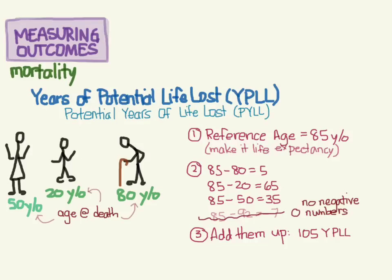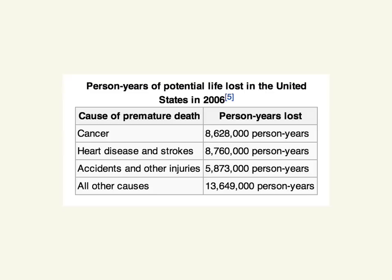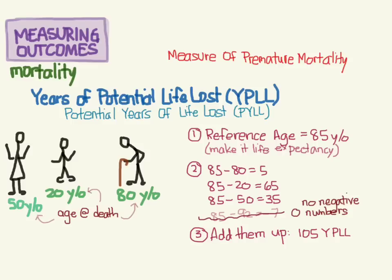You can look at all-cause mortality — meaning all deaths — or you can look at deaths due to specific causes. Here we're looking at years of potential life lost across four different etiologies: three specific causes and one bucket for all other causes. Things that kill younger people tend to carry more weight, so cancer — which kills more younger people than heart disease — ends up as a bigger number than heart disease in YPLL. That's years of potential life lost, YPLL, as a measure of premature mortality.